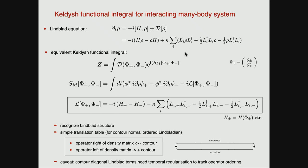What we then did was this Keldysh path integral construction. In particular, I want to remind you that the left or right action on the density matrix is remembered in the Keldysh path integral by an additional index, which labels the contour — the side on which the original operator was acting onto the density matrix. You can see the structure of the Lindblad action written here, with the right pre-factors that guarantee probability conservation.